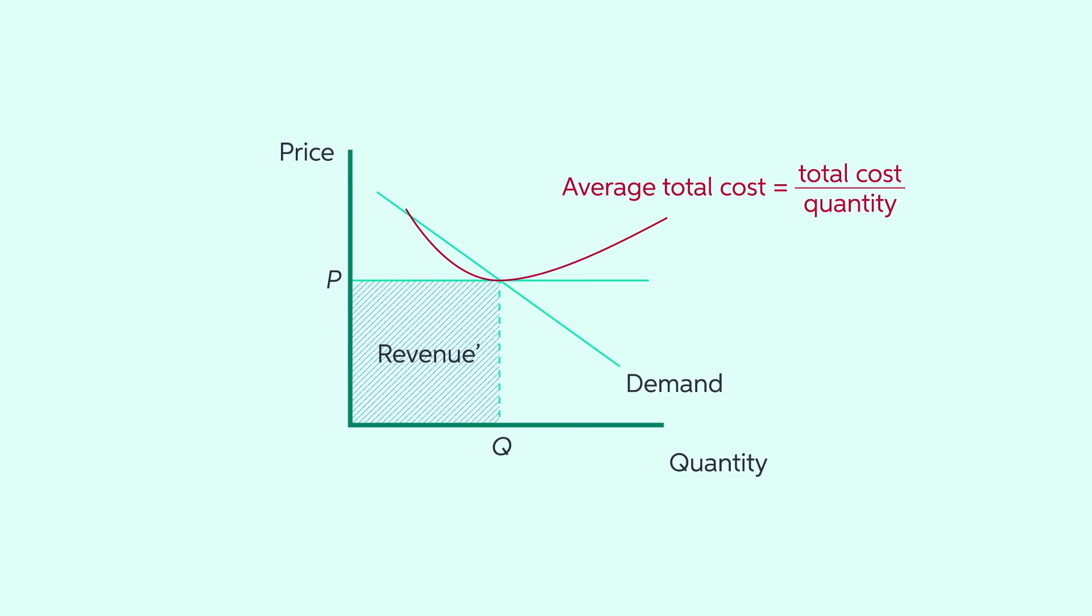Profit maximization occurs where the minimum of the average total cost line intersects with the price line. That means that the price paid by consumers is just enough to cover the average cost of the product and the profit is zero.